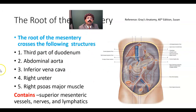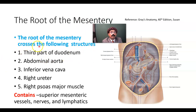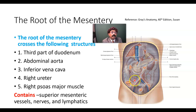The root or attached border of the mesentery crosses the following structures: the third part of the duodenum, the abdominal aorta, the inferior vena cava, the right ureter, and the right psoas major muscle. These are the structures crossed by the root of the mesentery.